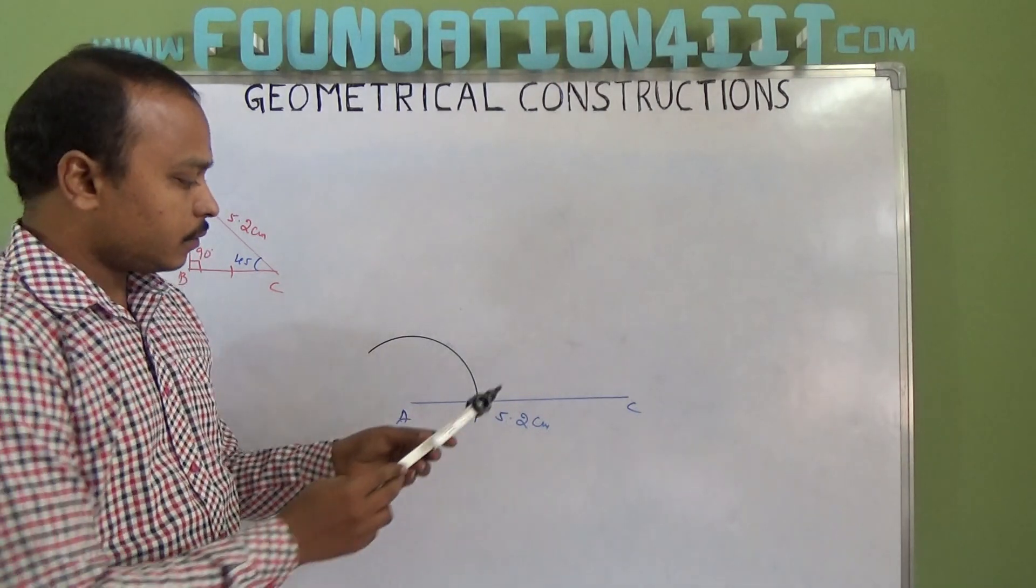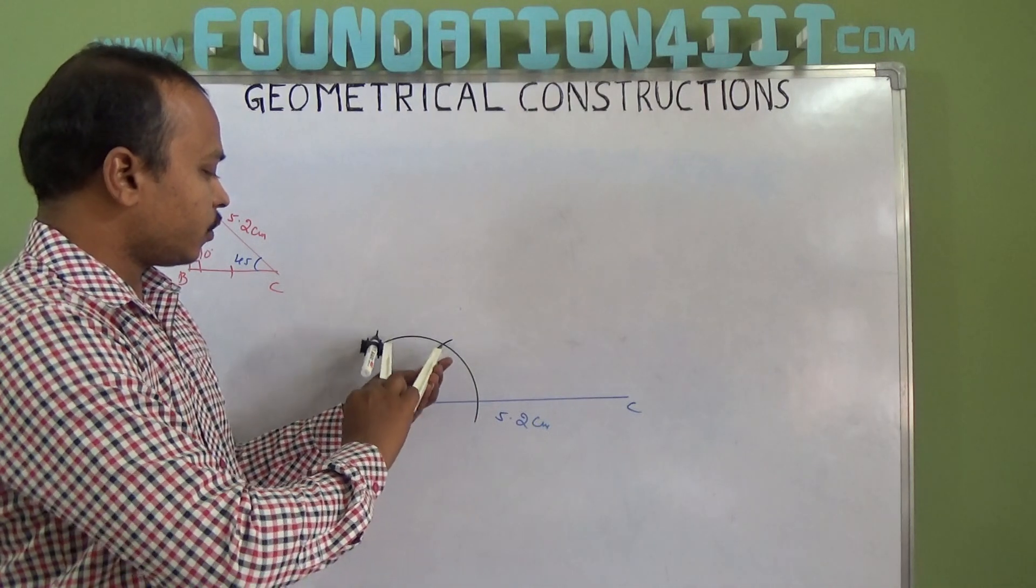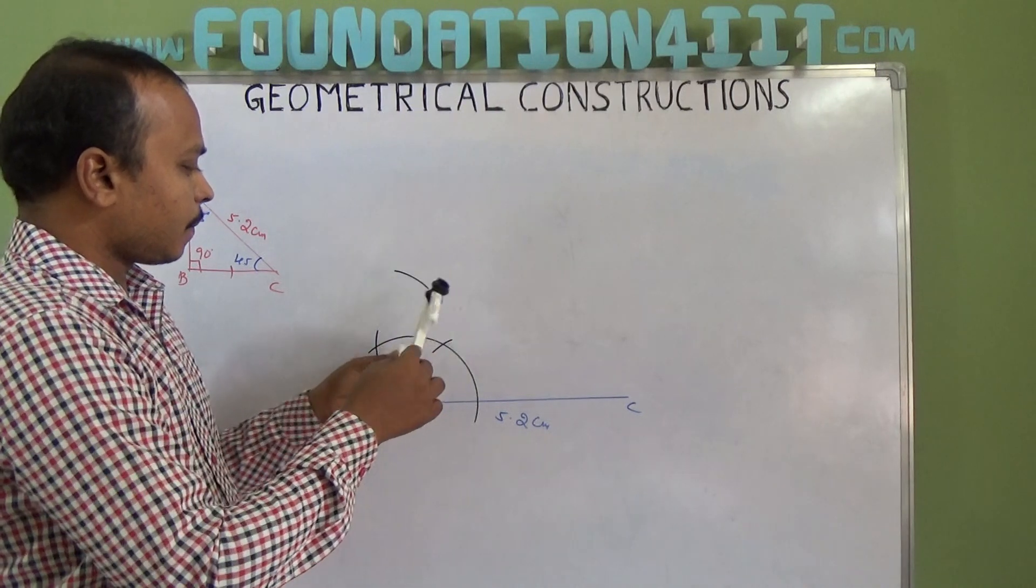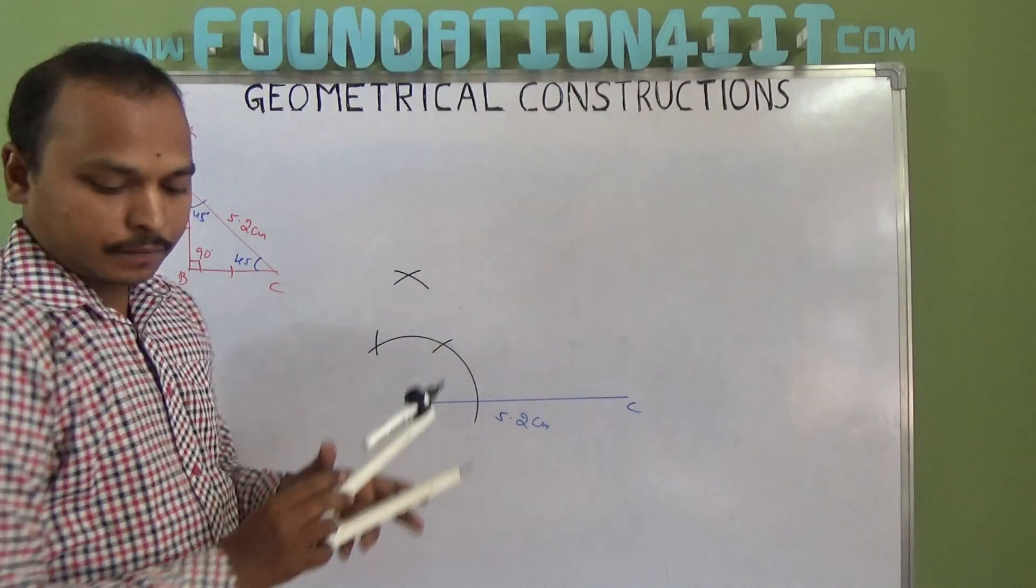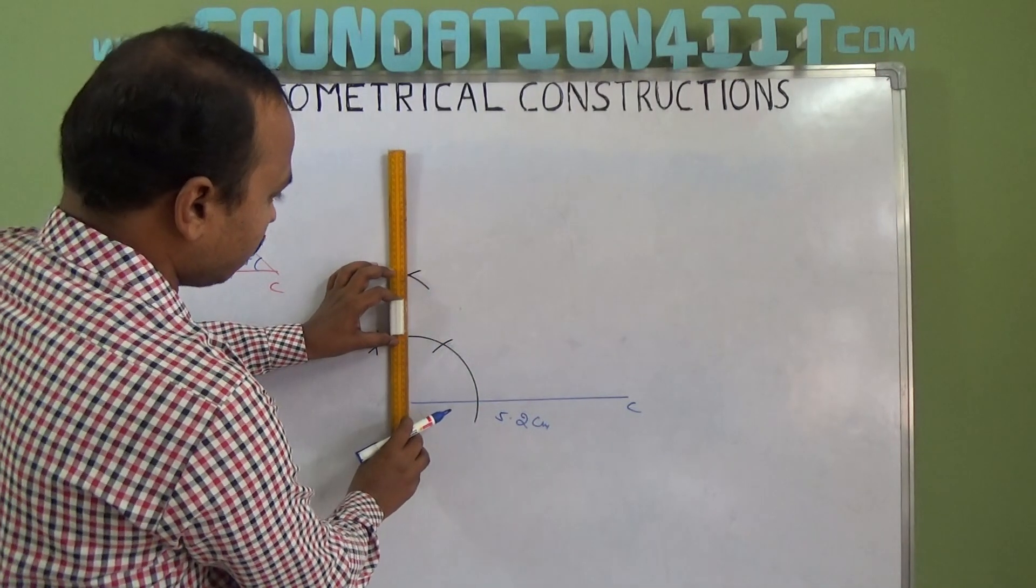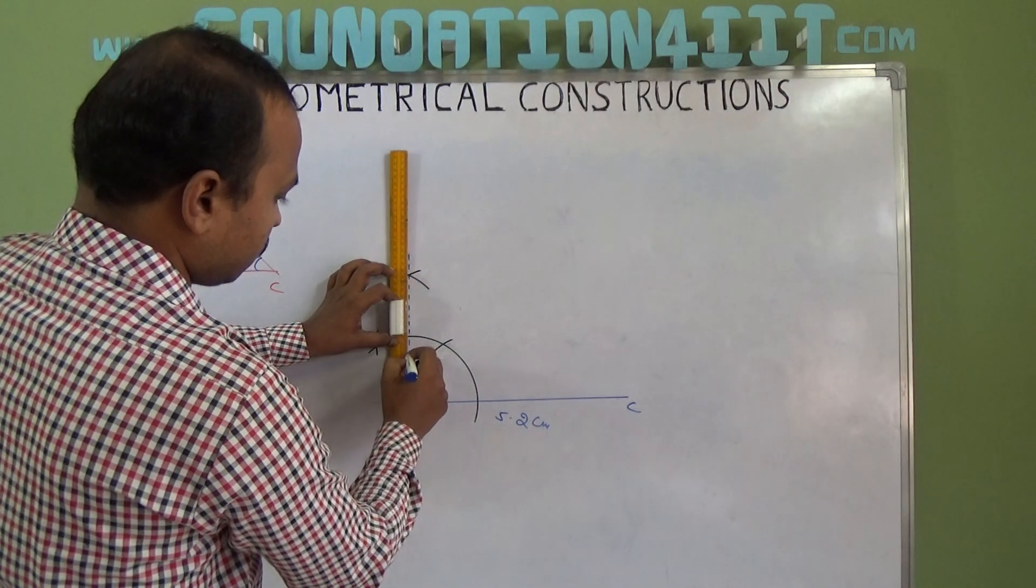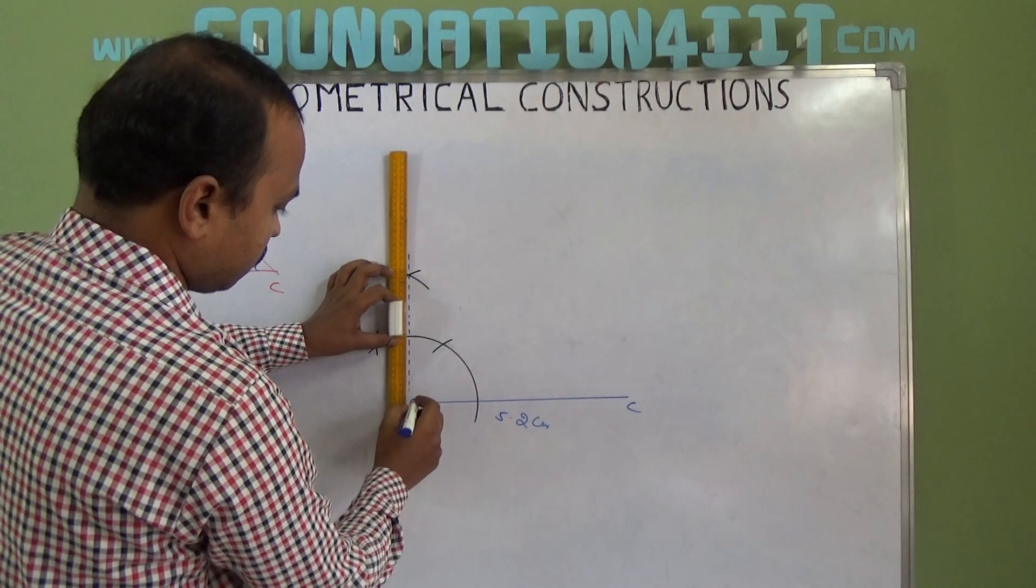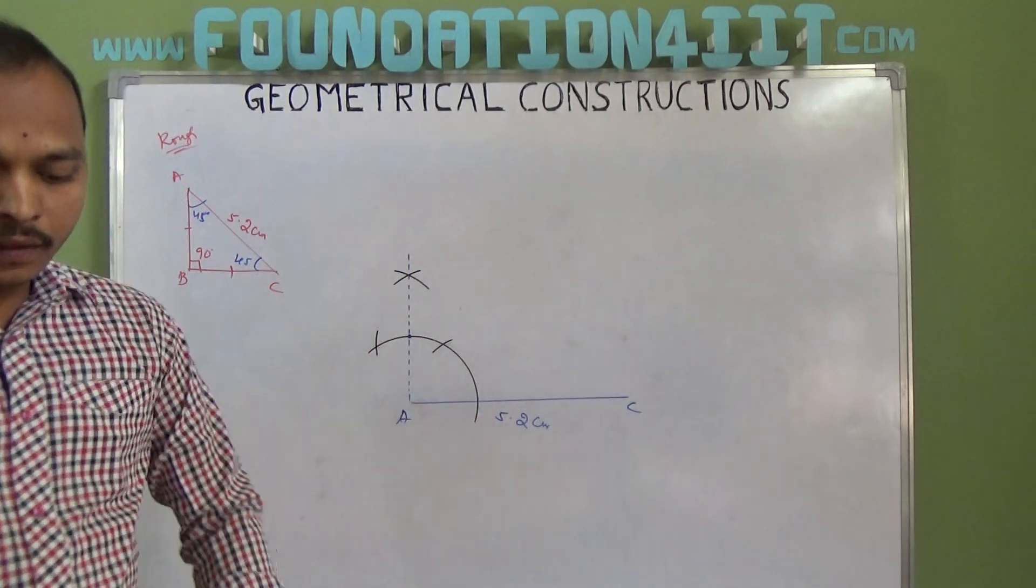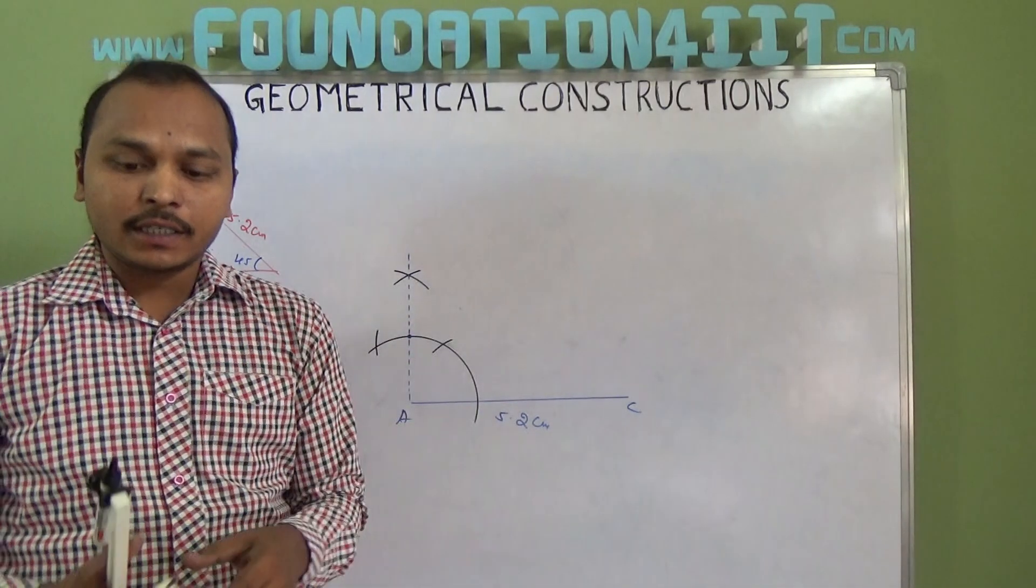Draw an arc. So construct 60 and 120. Then bisect both. First 90 degree line you draw, 90 degrees angle you construct. So this is 90 degree. Now 90 and 0, bisect to get 45 degrees. So this is 90 degree. Now take more than half arc, draw an arc.